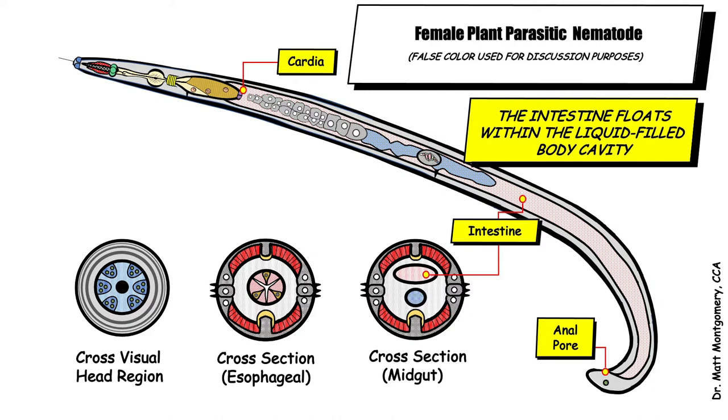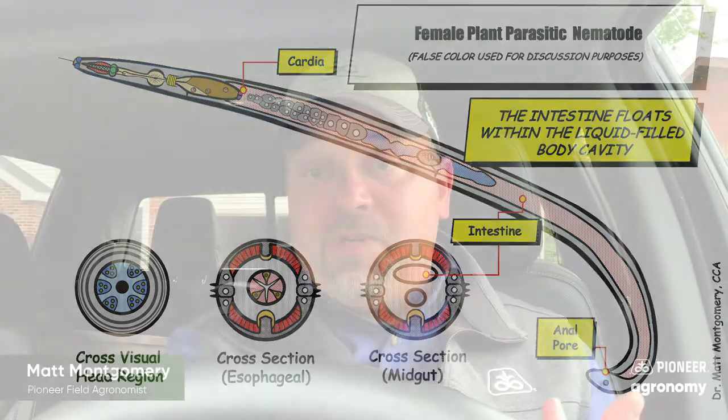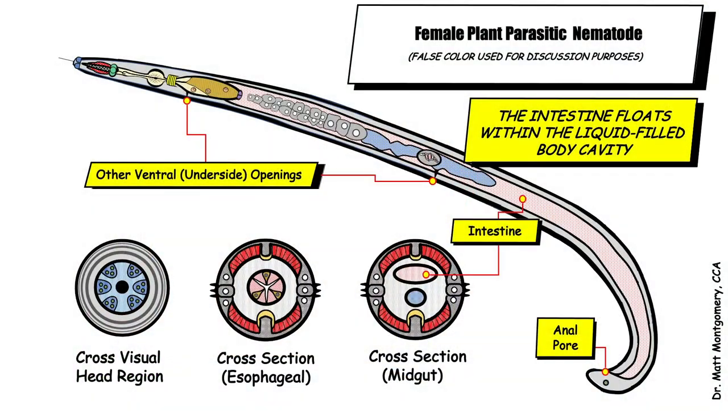That nutrition is absorbed from the intestine, and then waste material is excreted through something called the anal pore. There are actually several different openings you might see on plant parasitic nematodes, and all of those openings are on what we call the underside — the ventral side — of the nematode. A nematologist has to know those structures and the fact that they represent the ventral side so they can identify species. They also notice the size of certain organs and how they overlap one another — all those things are used to identify nematode species.